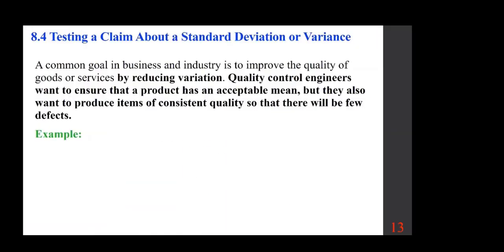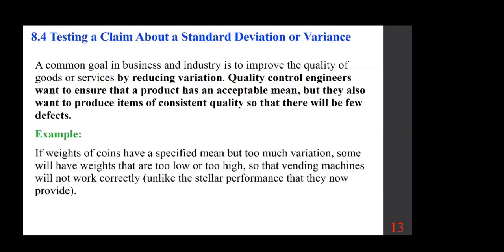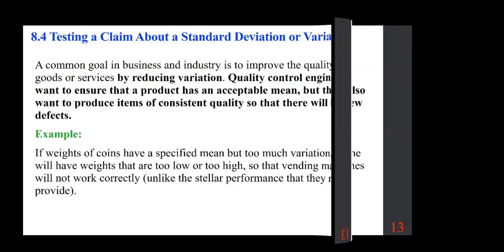Why do we test claims about standard deviation or variance? The common goal in business and industry is to improve quality by reducing variation. Quality control engineers want items of consistent quality with few defects. For example, if coin weights have too much variation, some will be too low or too high and vending machines will not work correctly — which is why proper standard deviation matters.